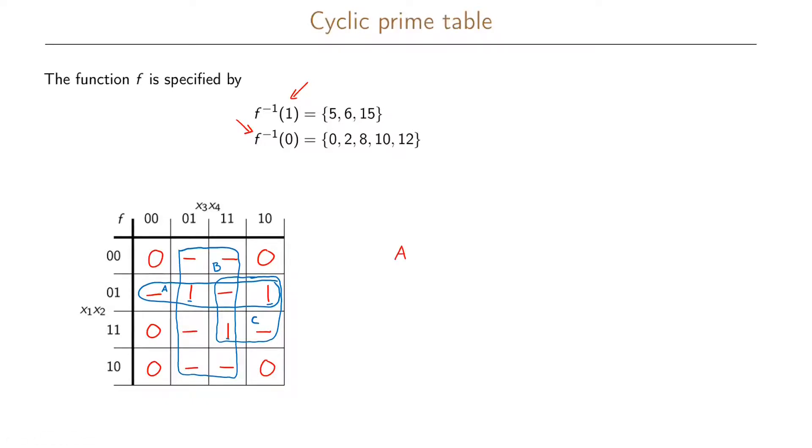And then we make our prime table. So we have the prime implicants A, B, and C as rows. And then we have the min terms as columns. So we have 5, 6, and 15 as our columns here. And then we see that A will cover 5 and 6, B will cover 5 and 15, and C will cover 6 and 15.